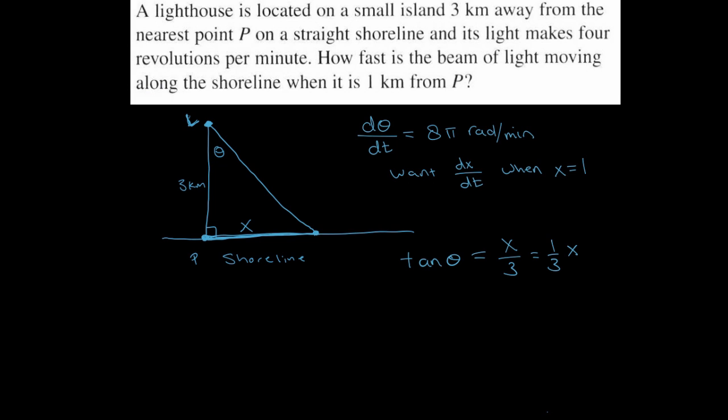So now we take the derivative. The derivative of tangent of θ with respect to t is secant squared θ times dθ/dt, and the derivative of one-third x is one-third times dx/dt. Okay, so notice we know dθ/dt—that was given above, 8π—we're trying to find dx/dt, so we're not going to be plugging anything into that.